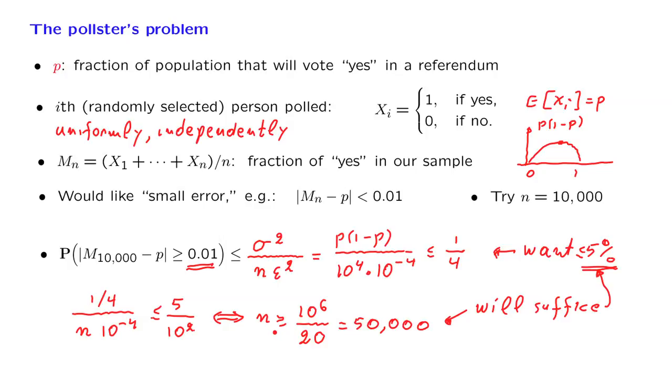And then there's another effect. Our calculation here was based on this inequality, which is the Chebyshev inequality. But the Chebyshev inequality is not that accurate. It turns out that if we use more accurate estimates of this probability, we will find that actually much smaller values of n will be enough for our purposes.